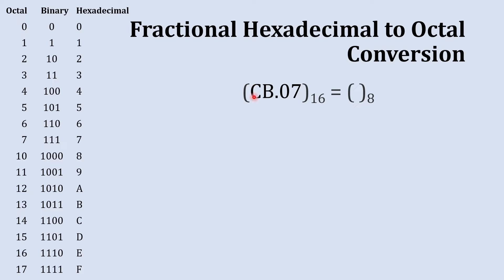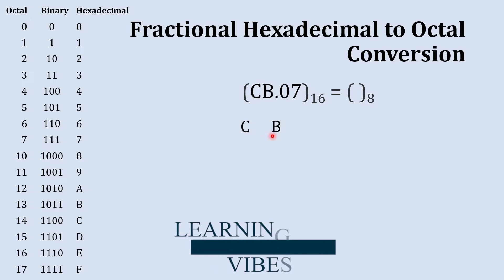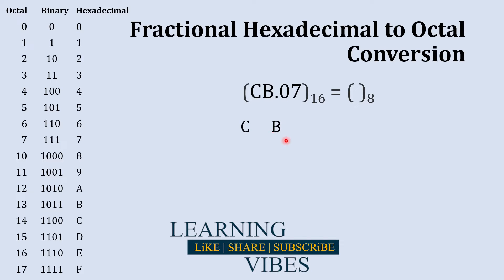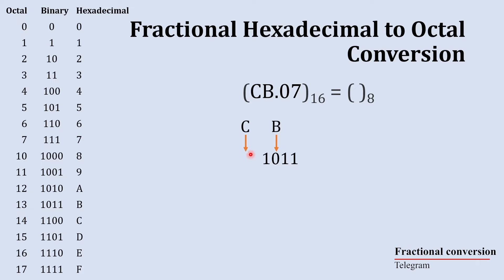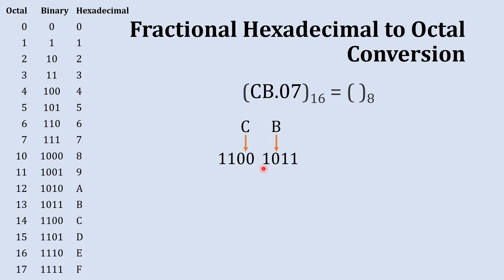First we'll take the whole number part C and B. We'll start with B — the binary equivalent to B is 1011, so we write 1011 here. The next is C, and the binary equivalent to C is 1100, so we write 1100 here. Combining these numbers together gives us 11001011.